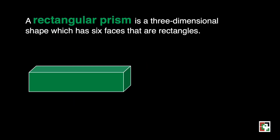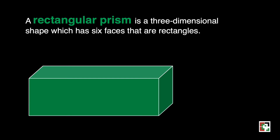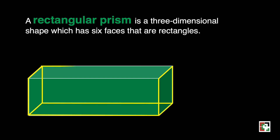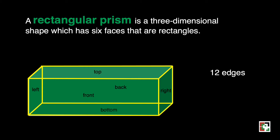The next one is a rectangular prism. It is a three-dimensional shape which has six faces that are rectangles. Let's count the number of edges: 1, 2, 3, 4, 5, 6, 7, 8, 9, 10, 11, and 12 — a total of 12 edges. The faces are the front, back, right, left, top, and bottom — a total of six rectangular faces. There are a total of eight vertices.